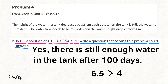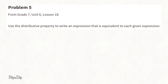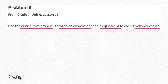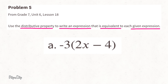Problem 5 (from Grade 7, Unit 6, Lesson 18): Use the distributive property to write an equivalent expression. Part A: multiply the term outside the parentheses by both terms inside. We have −3 times 2x and −3 times the second term.